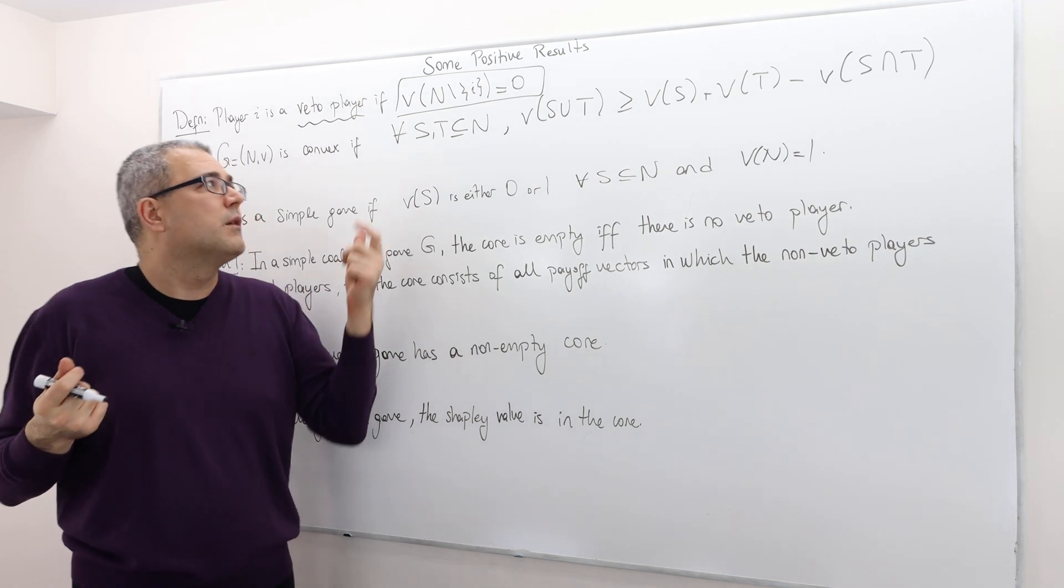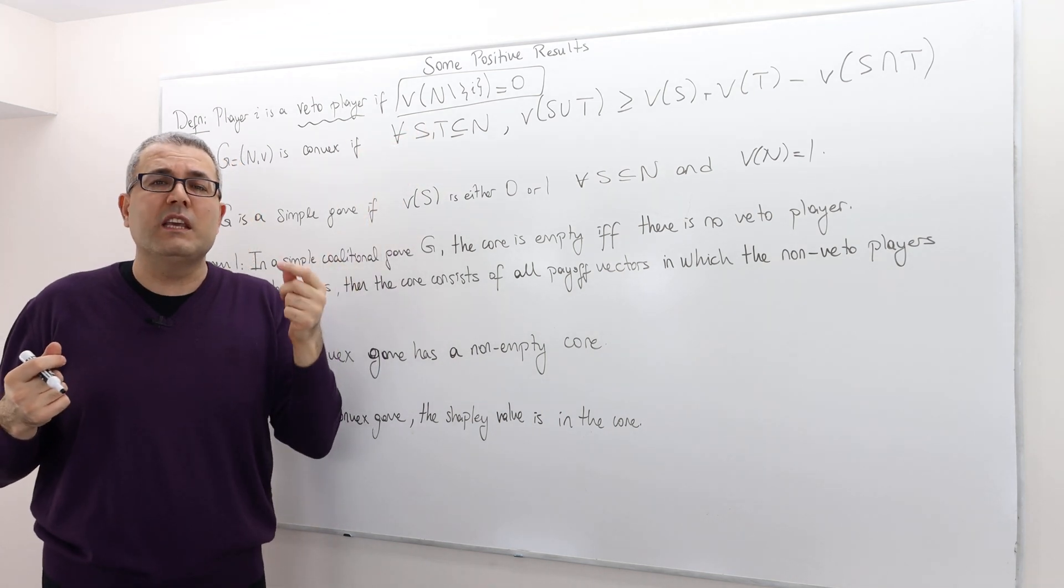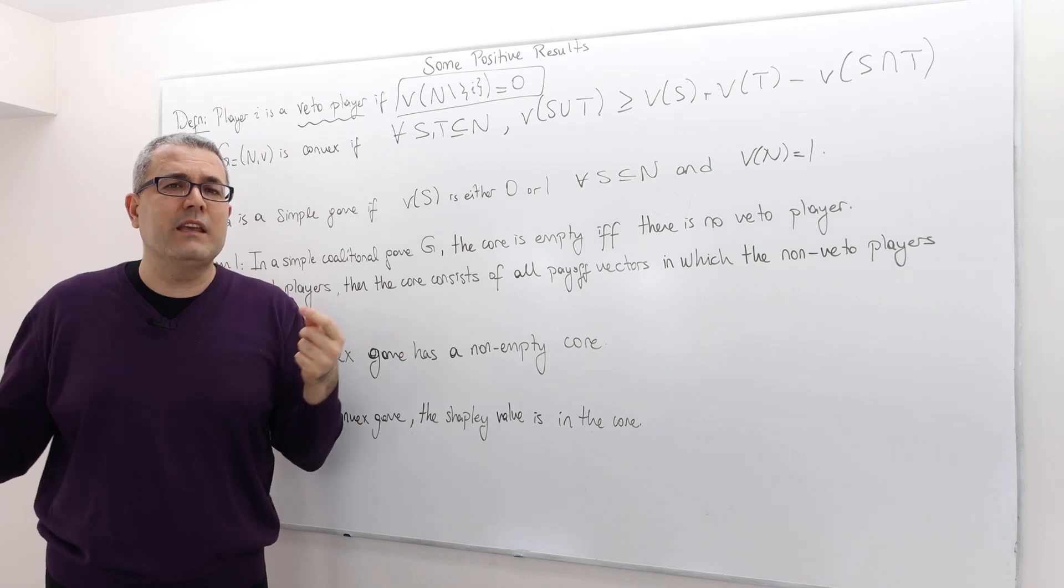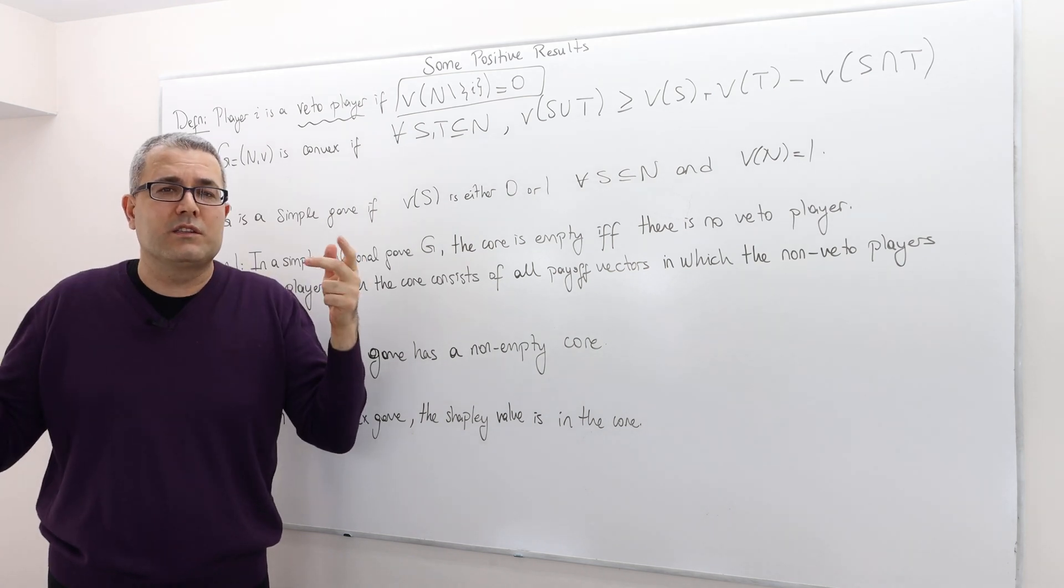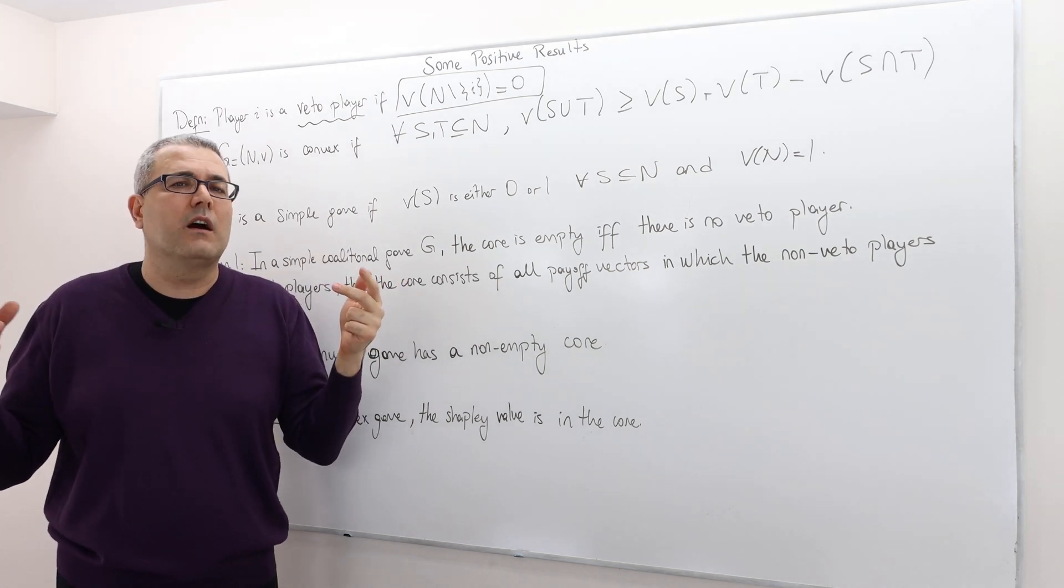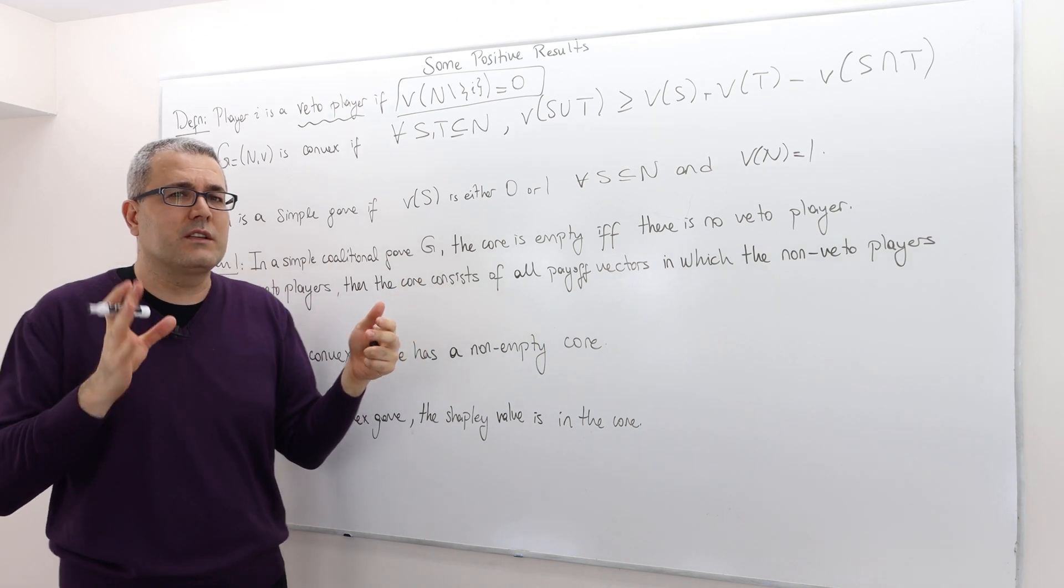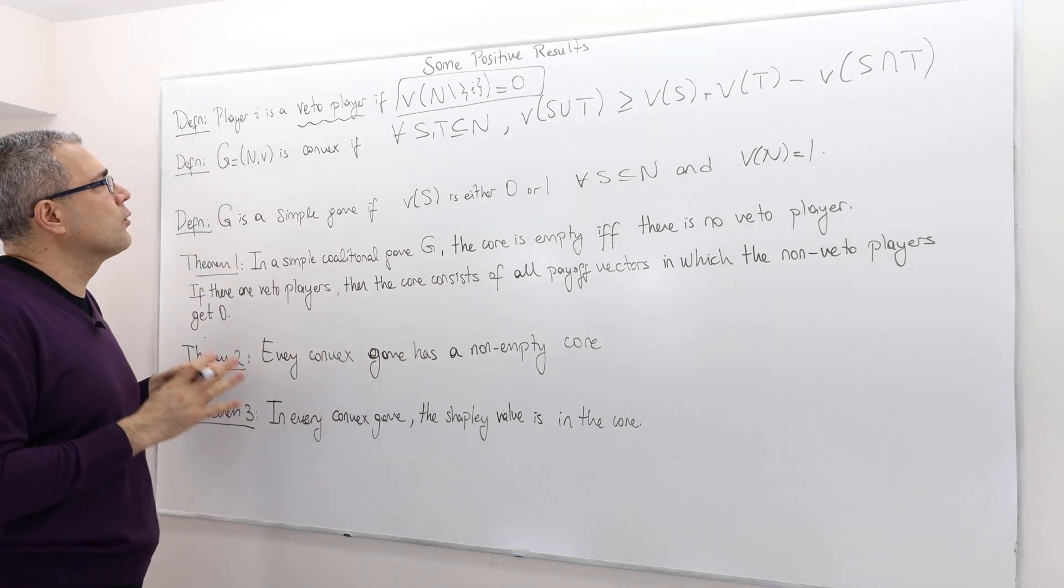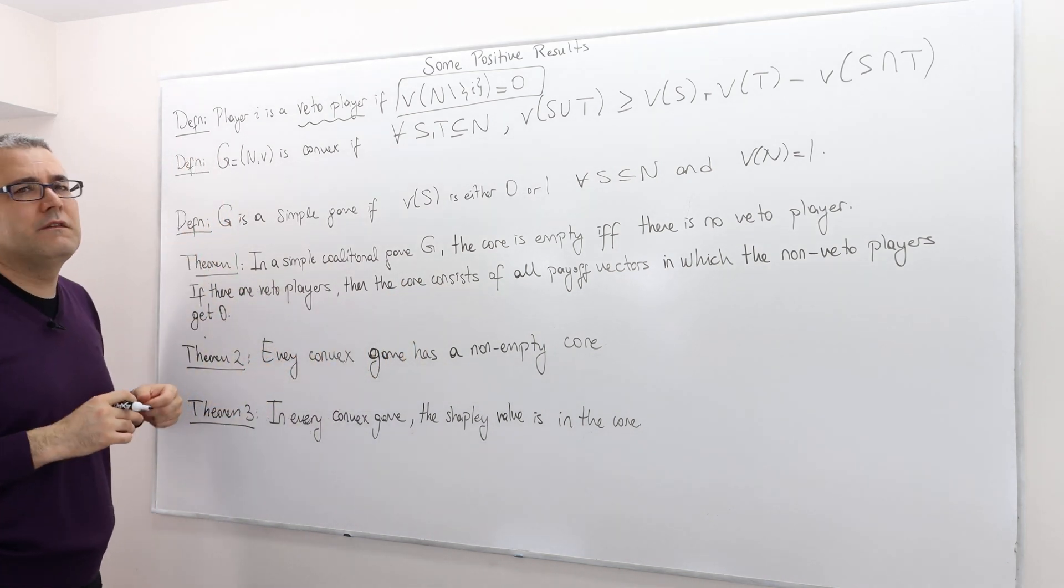In a sense, player i is a very key player. If you take him out, well, there's nothing to share for the remaining players. So in that sense, it's a very, very important player. So we call them as veto player.